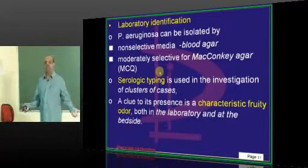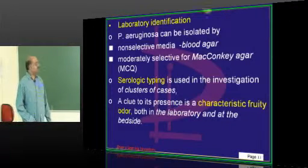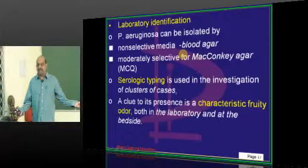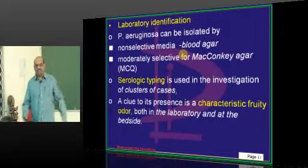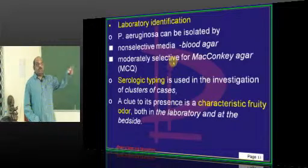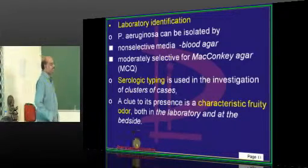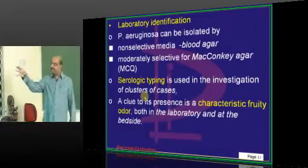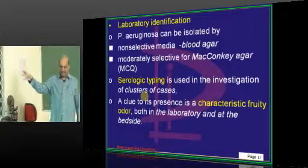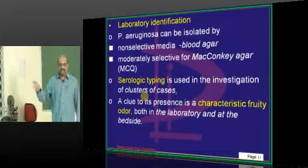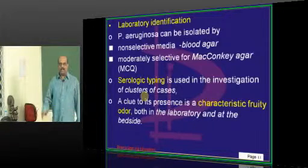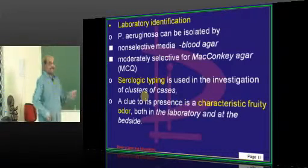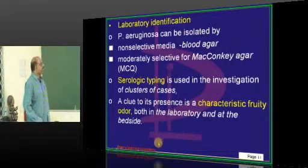How do you isolate Pseudomonas? You can use a non-selective medium like blood agar where it can grow anywhere. You can also use a moderately selective medium like MacConkey's agar. If there is a cluster of cases — for example, a contaminated swimming pool where everyone develops hot tub folliculitis — serological typing is the method used for the epidemiological investigation.